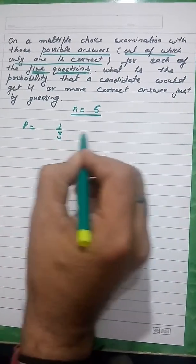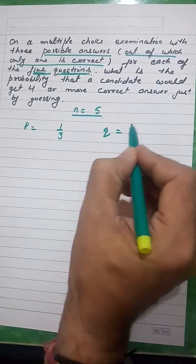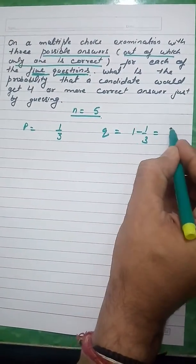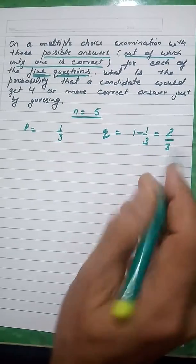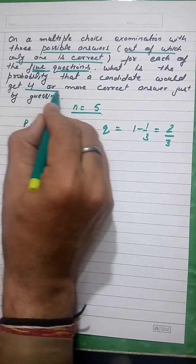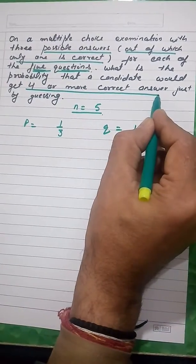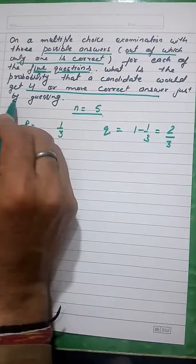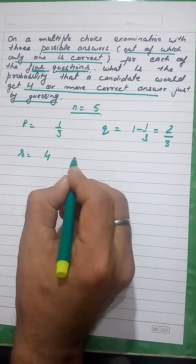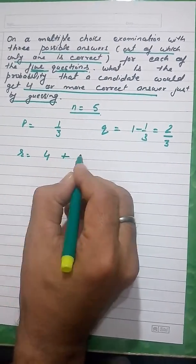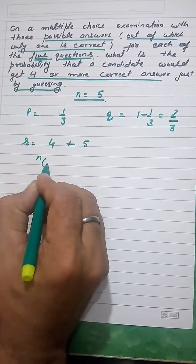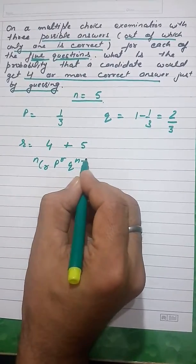The probability of success P is equal to one by three, since A, B, C are the possible answers. The probability of failure Q is one minus one by three, which is two by three. You want four or more correct answers, so R takes the values four and five.